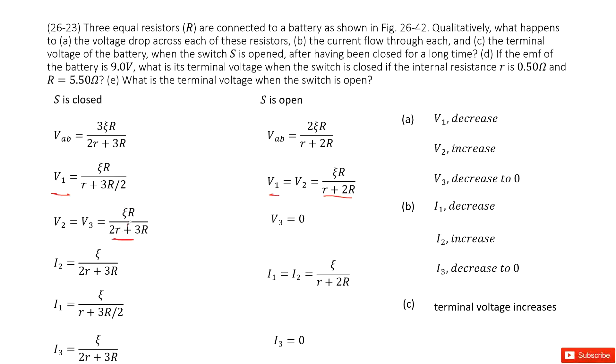We can see V2 S is closed is this term, and S is open is this term. Of course, is increased. And V3, we can see, it just decreased to 0. Now we look at how the current changes.